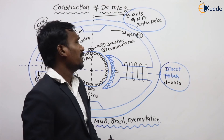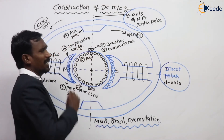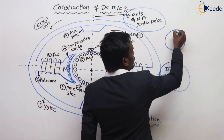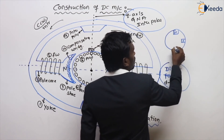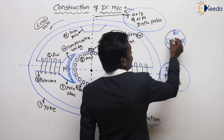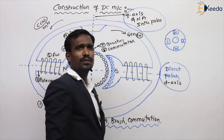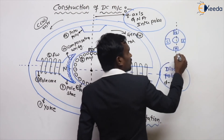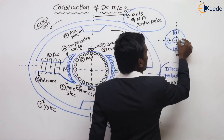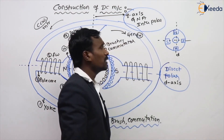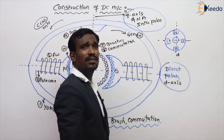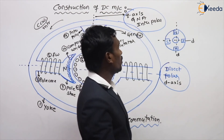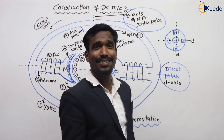Now, if you have a four-pole machine — north pole, south pole, north pole, south pole — tell me: which is the D-axis? The axis that flows through the pole centers is the D-axis. If both these axes flow through the pole centers, both are D-axis. Then where is the Q-axis? Can you tell me? Is it possible to draw the Q-axis?